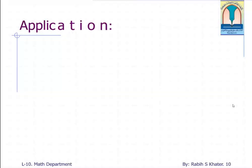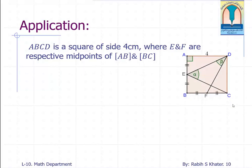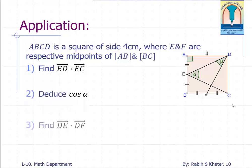As an application, consider ABCD to be a square of side 4 cm where E and F are respective midpoints of segments AB and BC. Now please stop the video, grab a pen and a paper and try to solve these points.